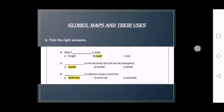Now see the last one. Dash is a collection of maps in book form. Option A, World Atlas. Option B, World Copy. Option C, World Book. The right answer is World Atlas. World Atlas is a collection of maps in book form.